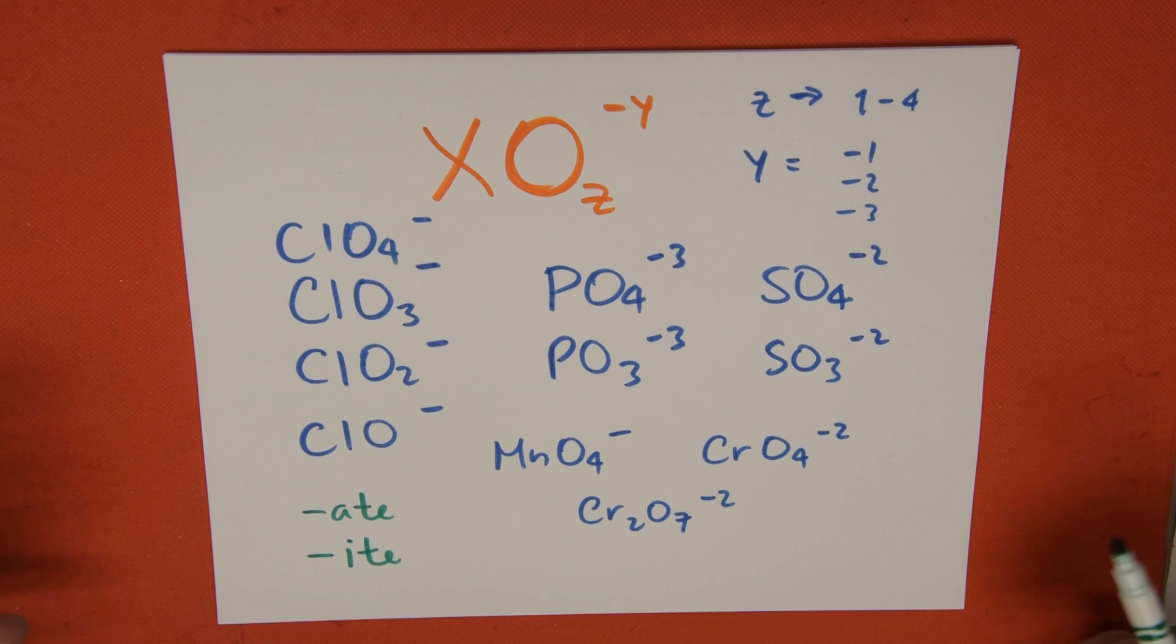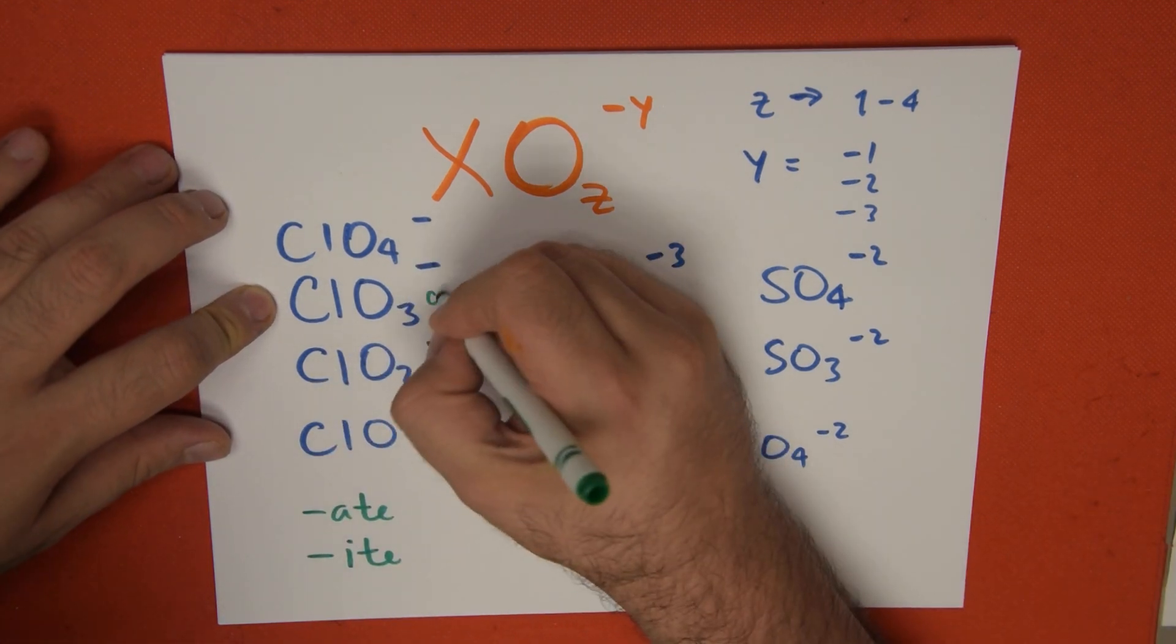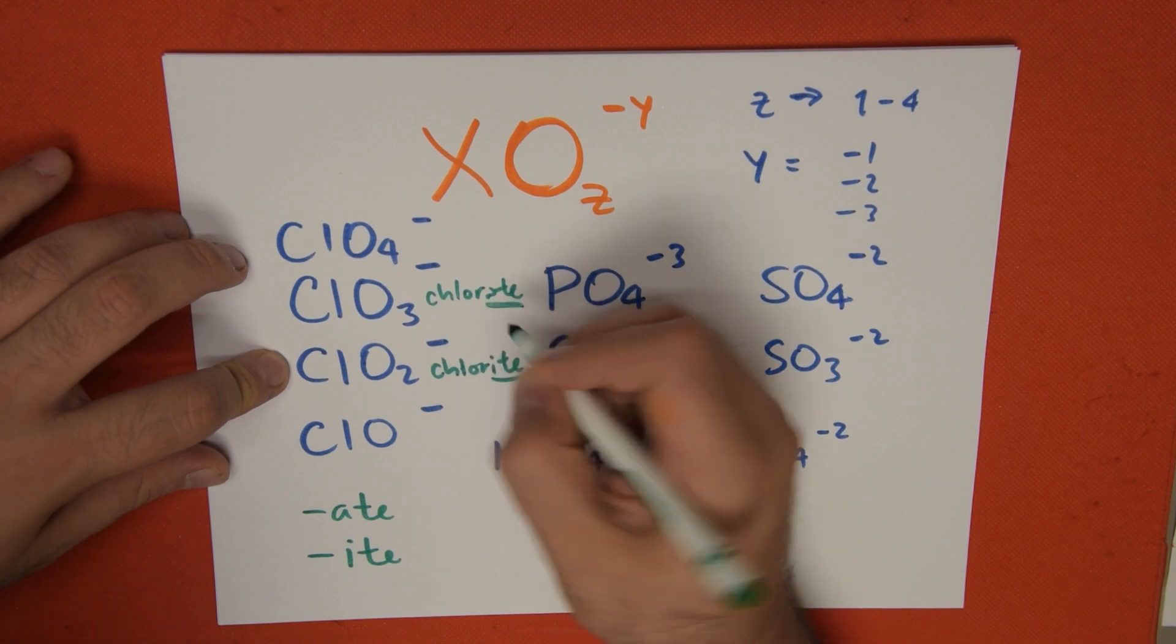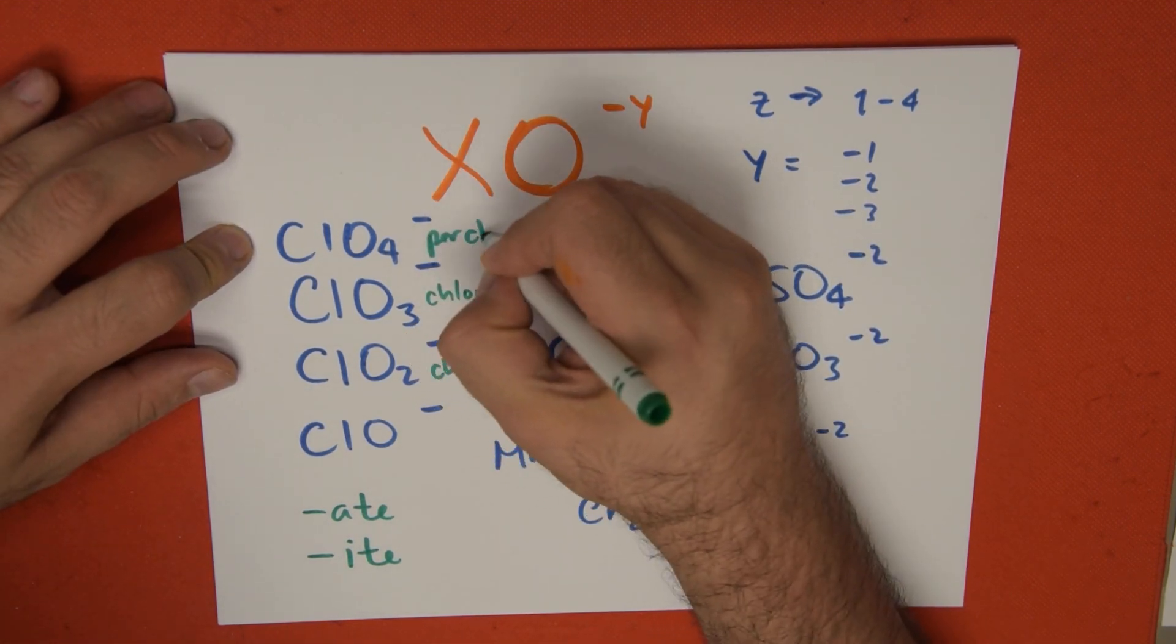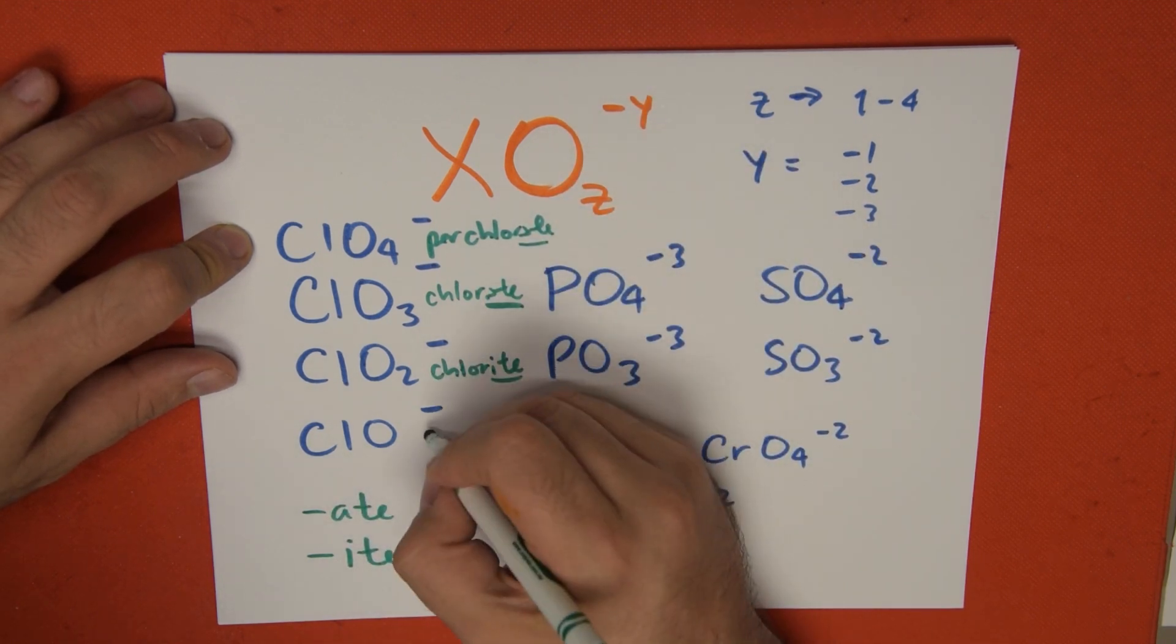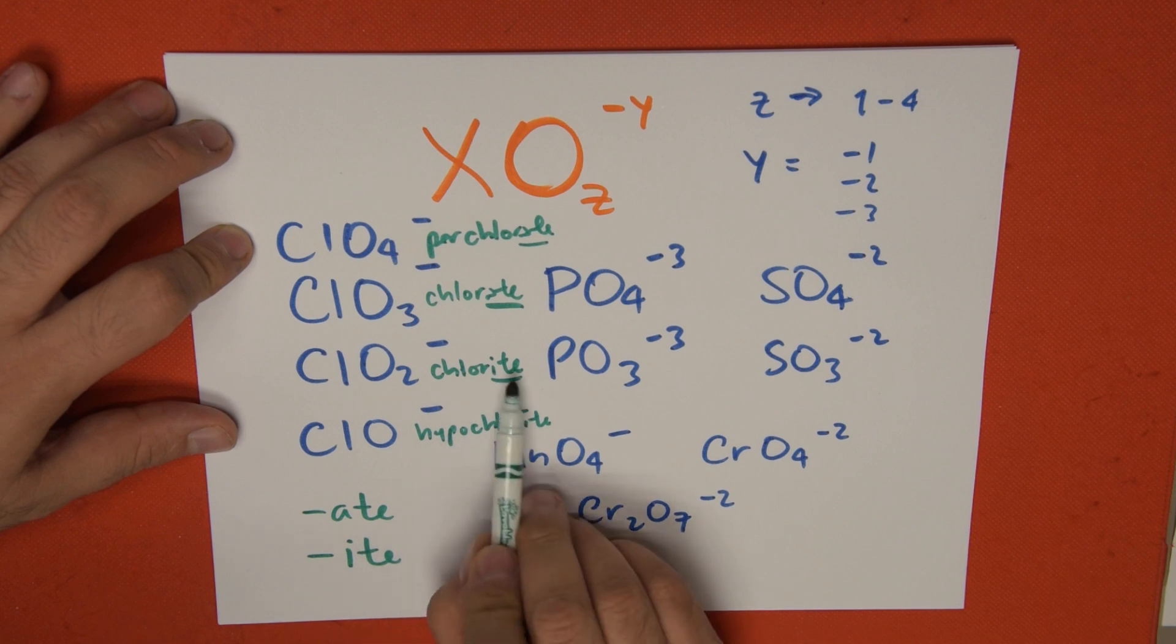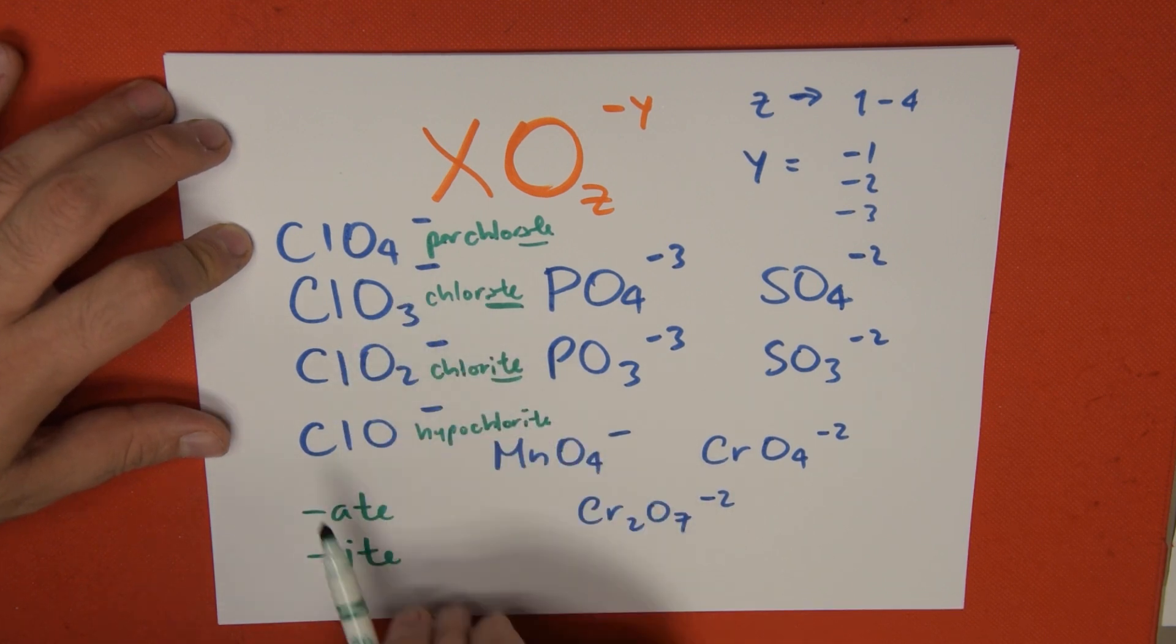For example, ClO3 is called chlorate. ClO2 is called chlorite, with an I-T ending. ClO4 is going to be called perchlorate. And ClO is going to be called hypochlorite. If you notice a trend, as we go less oxygen, it becomes hypo and -ite. As we go higher oxygen, it becomes -ate or perchlorate.